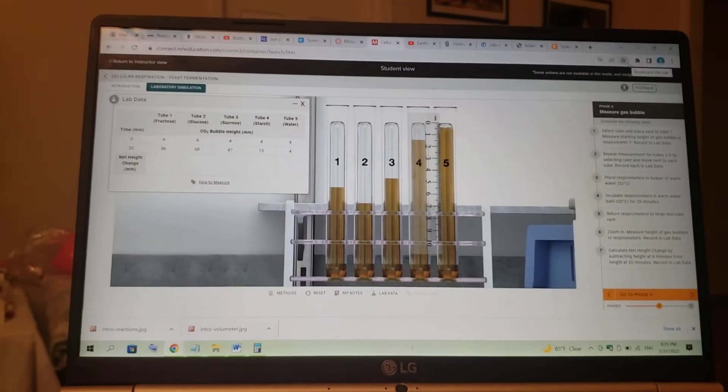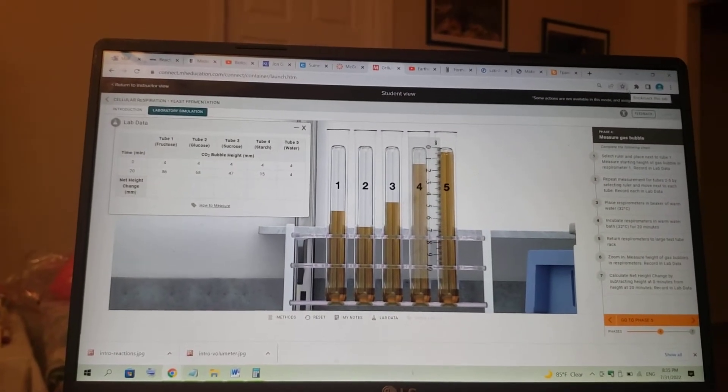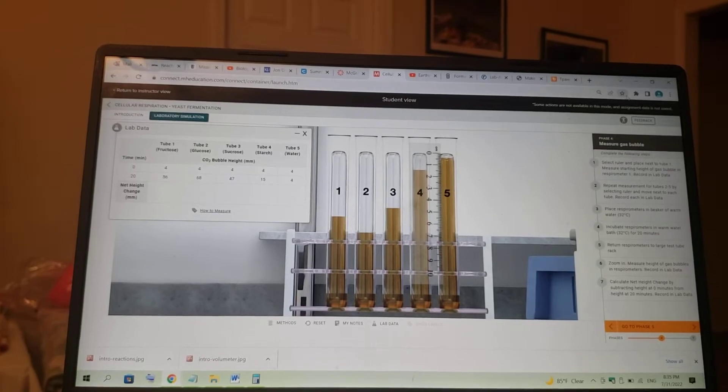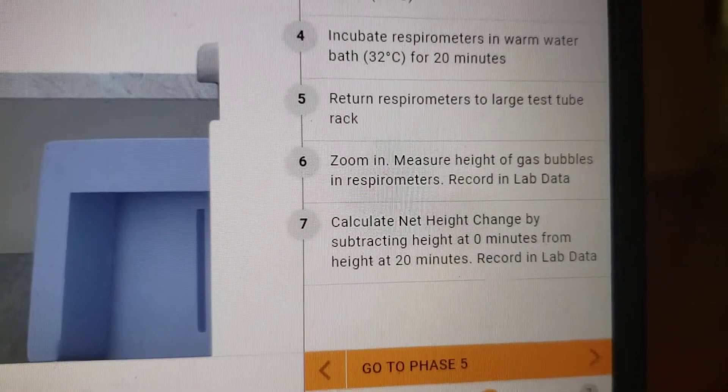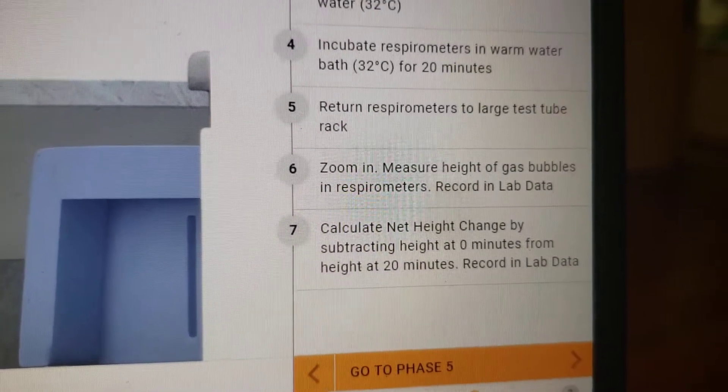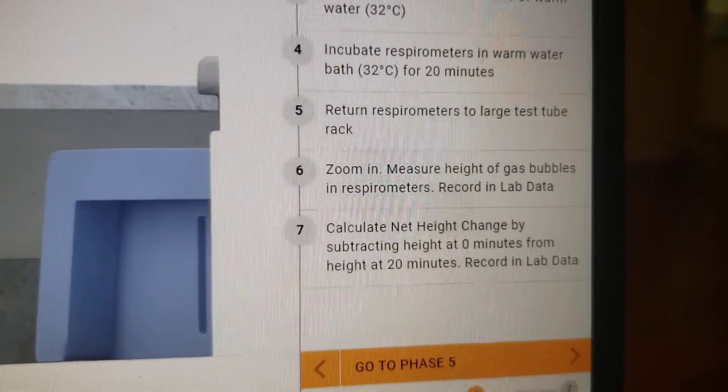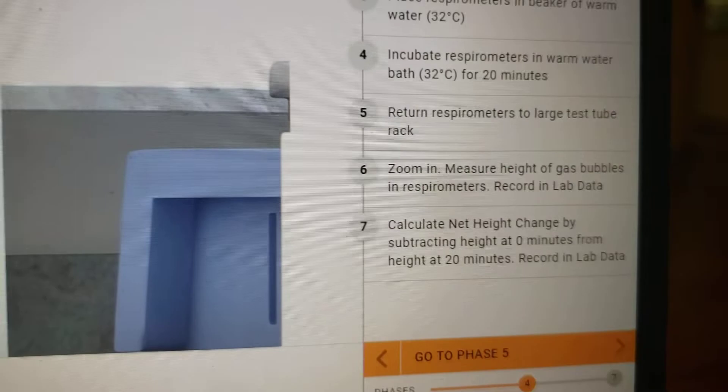Okay, yeast fermentation phase four, last step. Step seven, calculate net height change by subtracting height at zero minutes from height at 20 minutes, recording lab data.